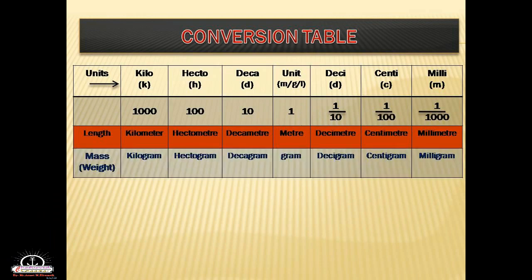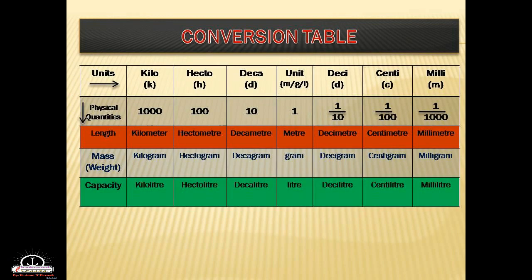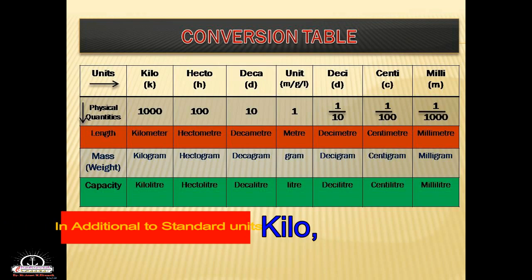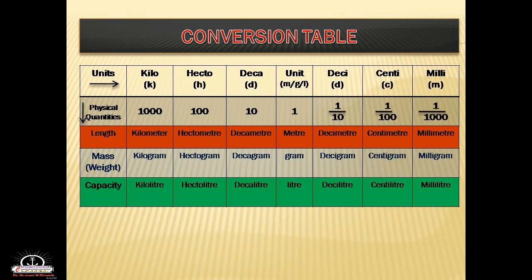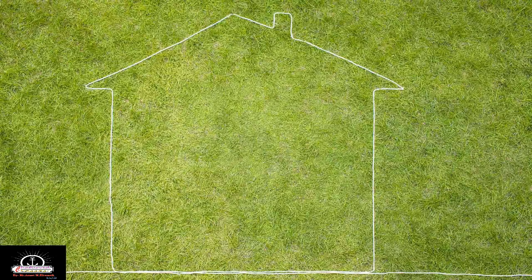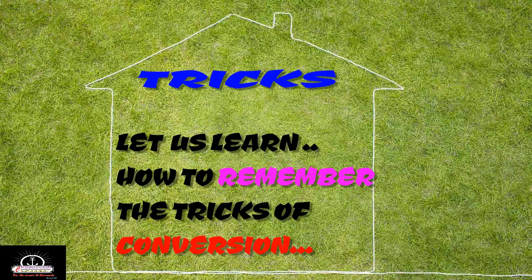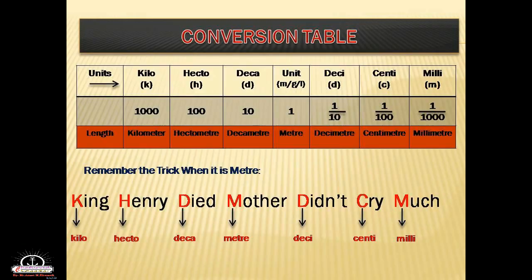Here we know the conversion table. Length is a physical quantity. Mass or weight is also a physical quantity. Capacity is also a physical quantity used in our daily life. In addition to the standard units, we have other units that help us find smaller or larger units. These units are kilo, hecto, deca, deci, centi, and milli.